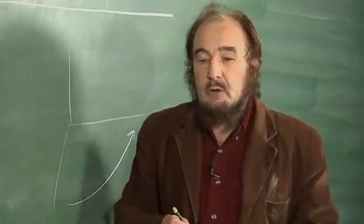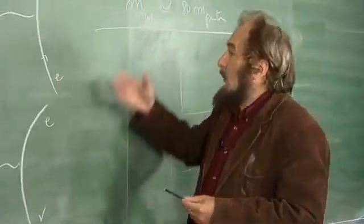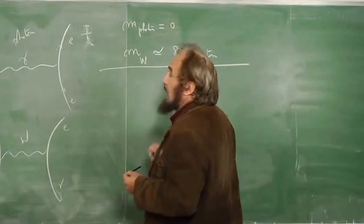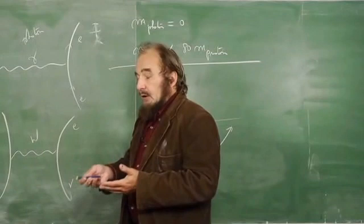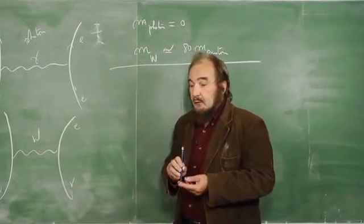Now, spontaneously broken symmetry is what makes the difference between photon and W. And this is at the crux, at the center of the Brout-Englert-Higgs mechanism.